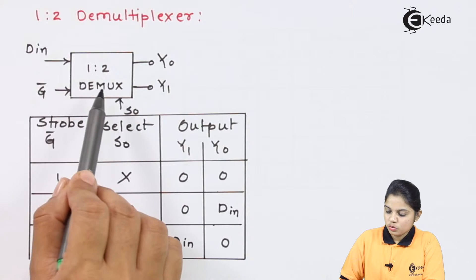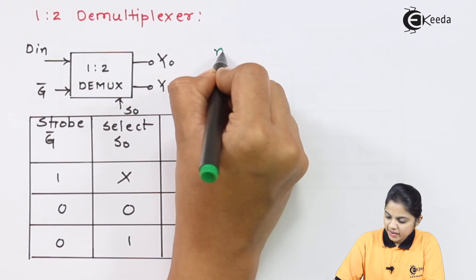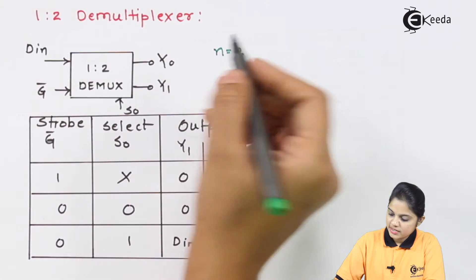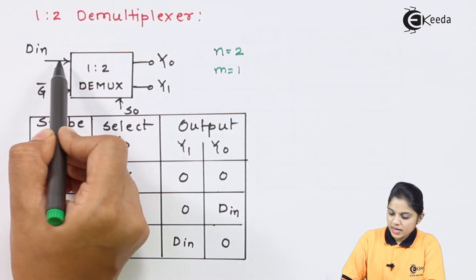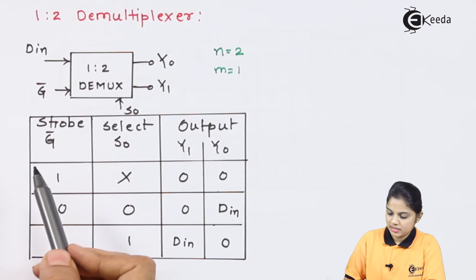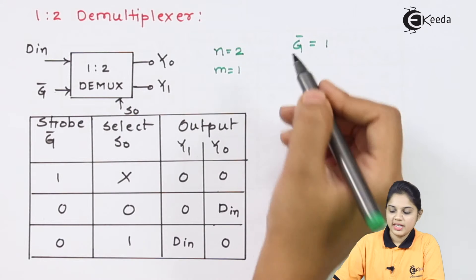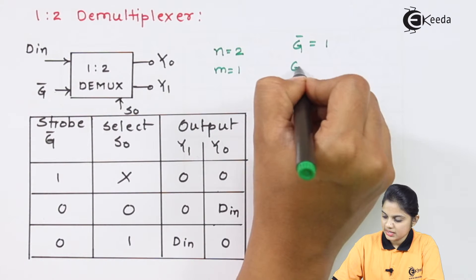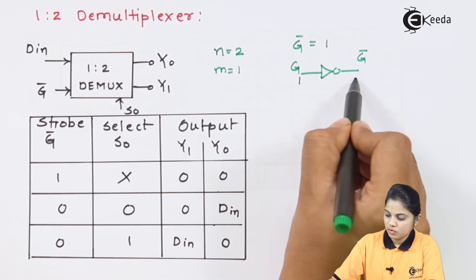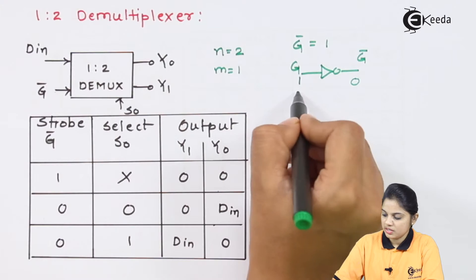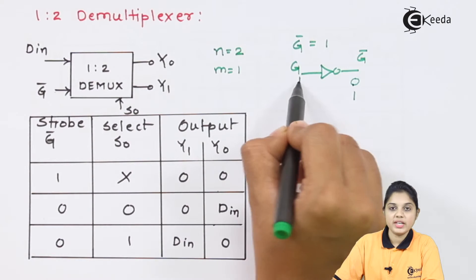For the 1-to-2 D-mux, data input equals 1 and output lines equal 2, so N is equal to 2 and M is equal to 1. It is called 1-to-2 because there is one input. Now regarding the strobe: if G-bar is equal to 1, it will be taken as 0 because G-bar is the inversion of G. So if you provide 1, G-bar equals 0, and if you provide 0, G-bar equals 1. Therefore G-bar should equal 0 so it is taken as active.